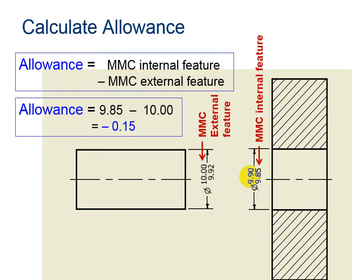So for the allowance of the interference fit, we use the maximum of the internal feature minus the maximum of the external feature.